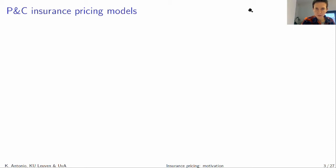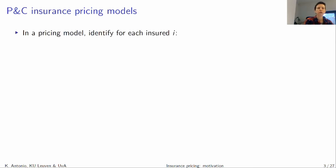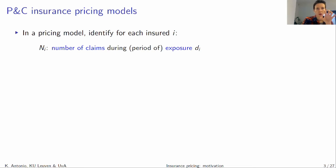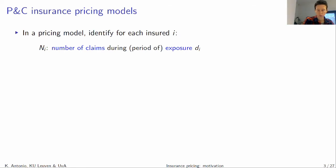We're going to talk about insurance pricing for property and casualty — PNC. As motivation for today's class, when we put up an insurance plan, we want to identify for each policyholder i in our portfolio the number of claims NI reported during a certain period of exposure DI. This is something we already introduced two weeks ago, and it's still one of the target variables we have in mind for today.